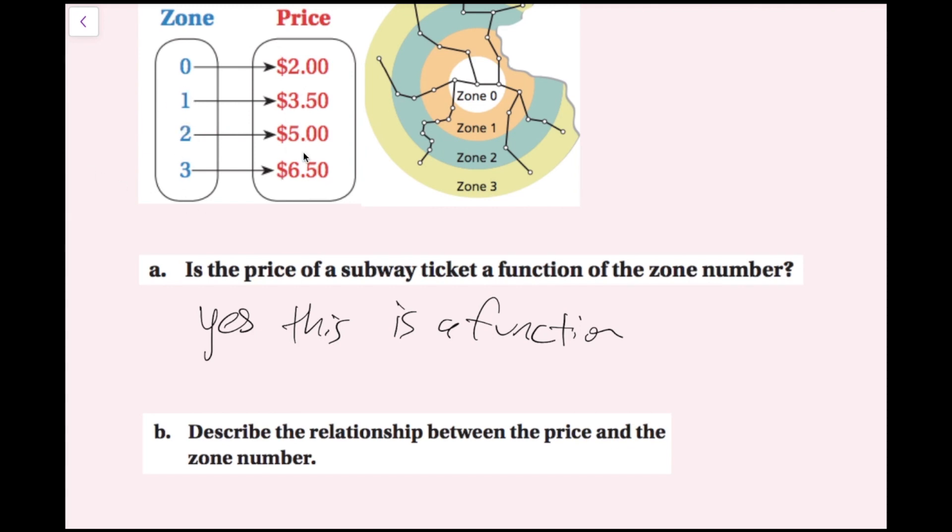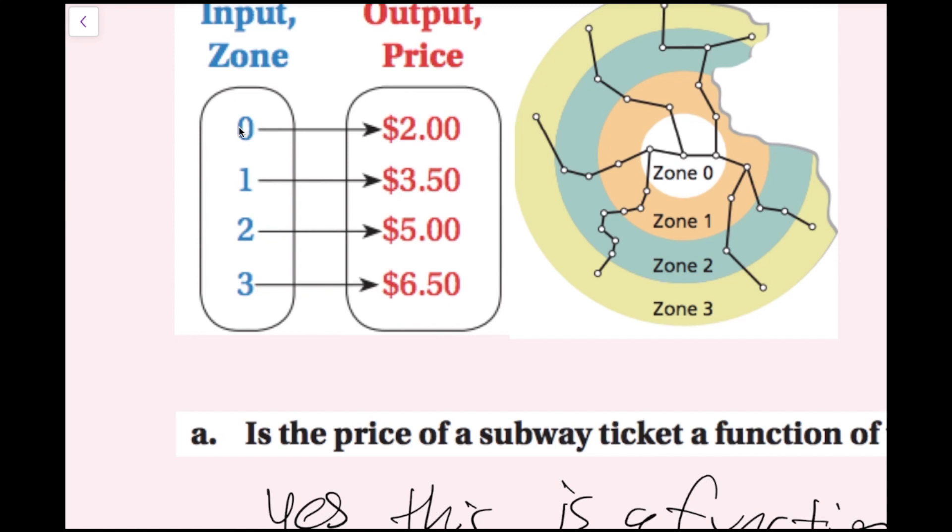Now for part B, it says describe the relationship between the price and the zone number. Well, I can see that zone 0 costs $2, and then when I go up one zone, I'm going from $2 to $3.50. And then when I go up another zone, I'm going from $3.50 to $5. And then when I go up another zone, I'm going from $5 to $6.50. So if you notice, each time that I increase my zone number, I'm also increasing my output price by $1.50.